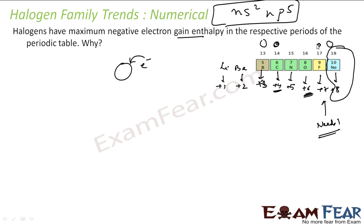Because of their small size, halogens can easily attract electrons — they have a very high effective nuclear charge and can easily attract an electron to attain noble gas configuration. So because of these two factors — needing only one electron and having a small size — they have a very high negative value of electron gain enthalpy.